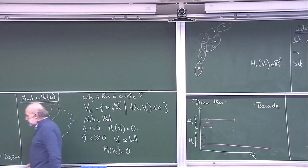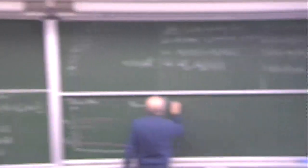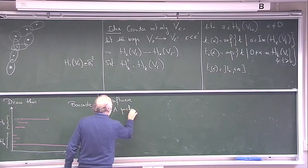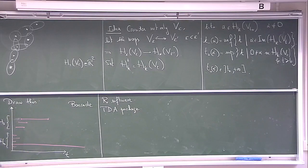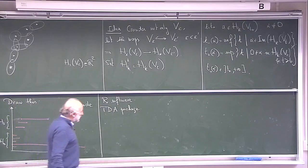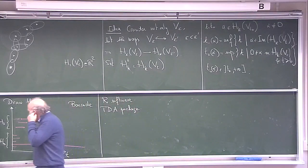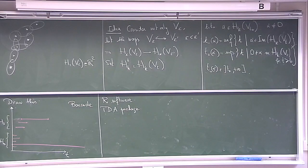This is easily implemented on a computer. There's a TDA package — TDA stands for topological data analysis — and you give it a cloud of points; there are several numerical methods and it will draw you this barcode. You can do that in high ambient dimension, yes, that's not much more complicated. What's more complicated is what happens if, instead of having one distance function, you had several of them — if you have something with values in higher dimensions.